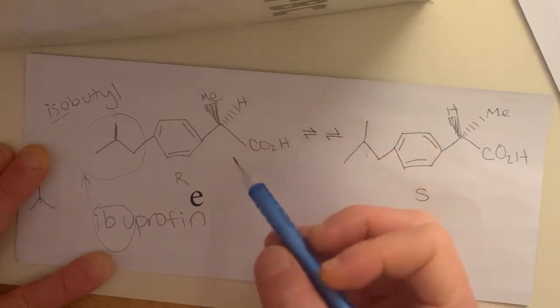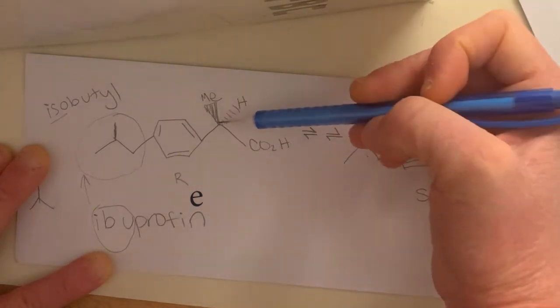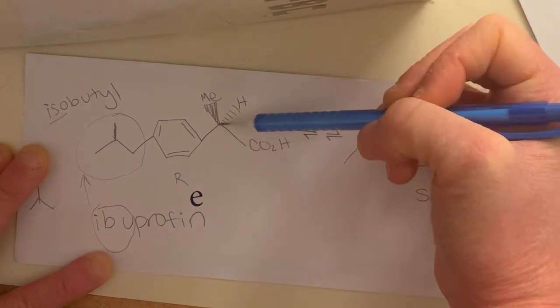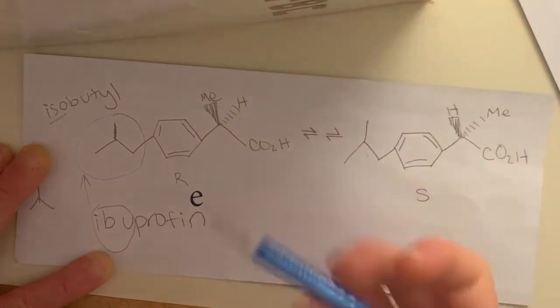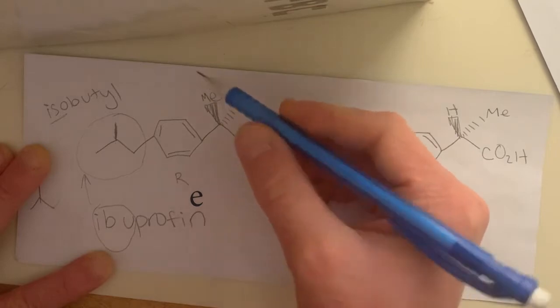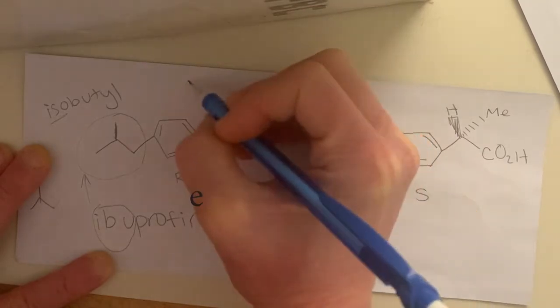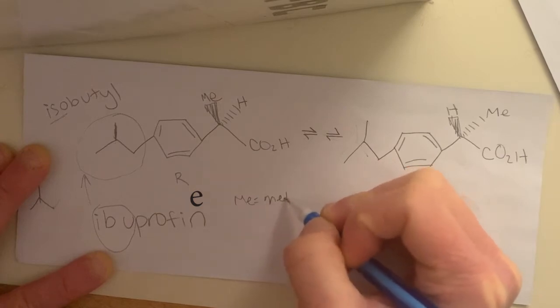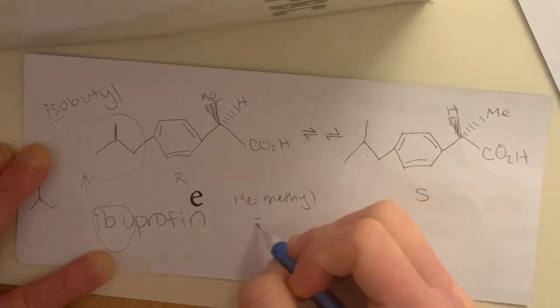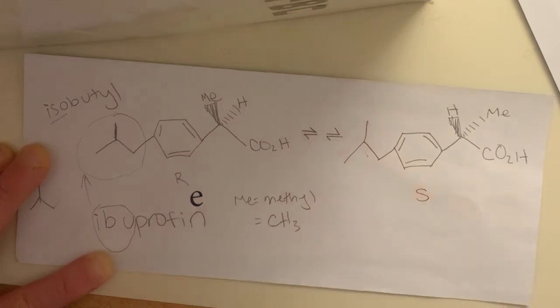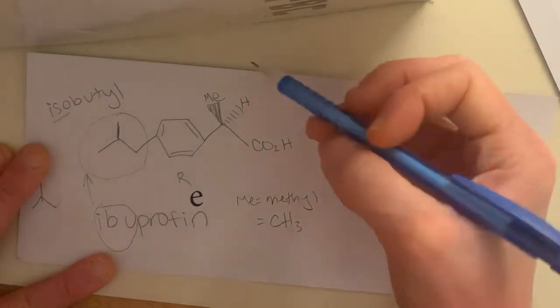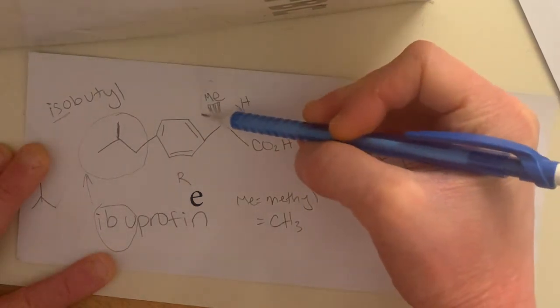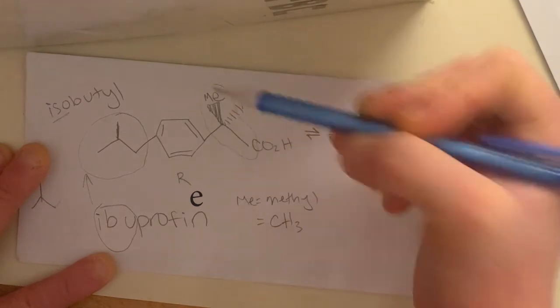And so you have one, two, three, and so this ME is a methyl group, and so ME equals methyl equals CH3, so a carbon attached to three hydrogens.